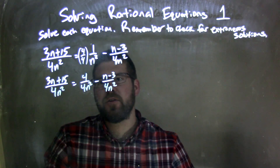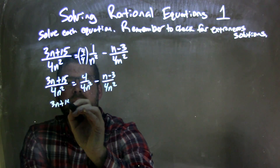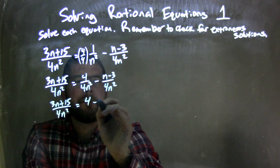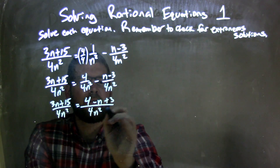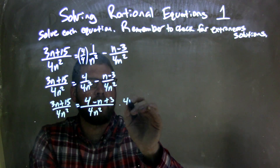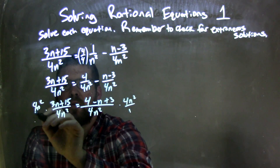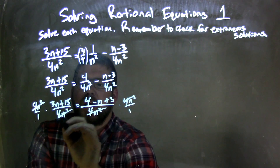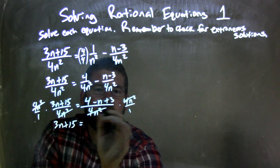Now I can combine these two, and in combining the two, I have the same base. So I have 3n plus 15 over 4n squared equals 4 minus n — distribute the minus — plus 3 over 4n squared. To get the 4n squared out of the denominator, I multiply both sides by 4n squared over 1. That eliminates the 4n squared on the right and the left, giving me 3n plus 15 on the left equals, and then 4 plus 3 is 7,